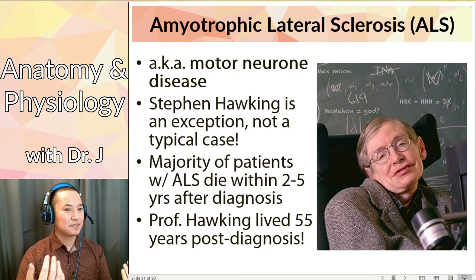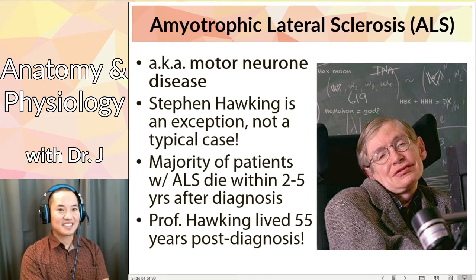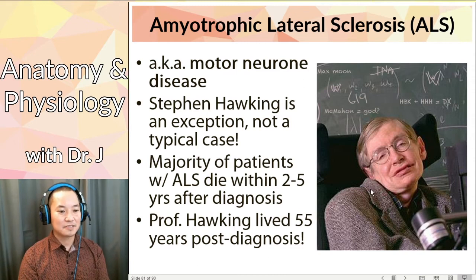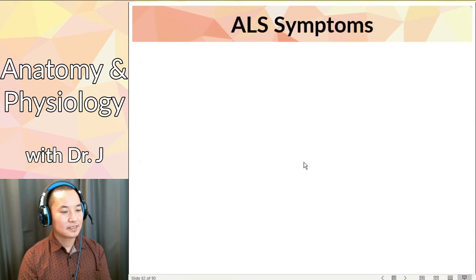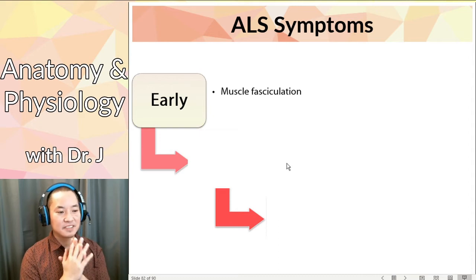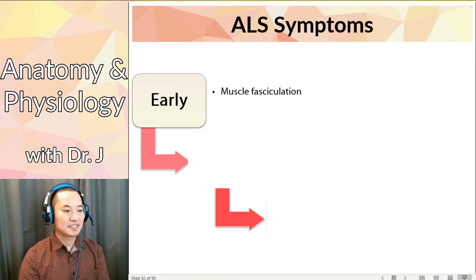Could he still read a book or see a screen? Could he still interpret information and hear what people were telling him? Yes - sensation remains intact. It's just that he wasn't able to control his muscles. Now, ALS symptoms: early stage ALS includes muscle fasciculation, which is random twitching, and then muscle stiffness and weakness.